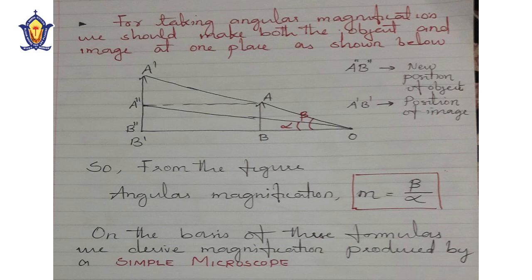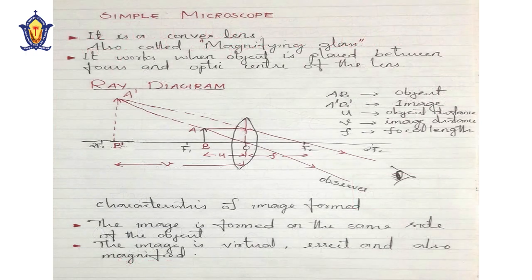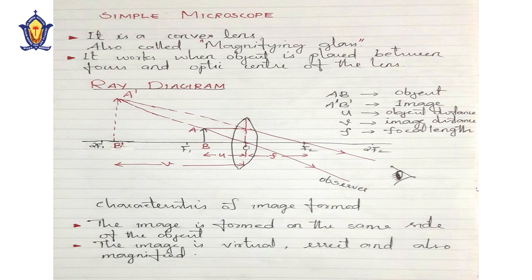Now we enter the topic of the simple microscope. It is so called because it has only one convex lens. The other name of the simple microscope is a magnifying glass. A simple microscope works only when the object is placed between the focus and the optic center of the lens — this is one of the cases of image formation by convex lenses studied in 10th standard.